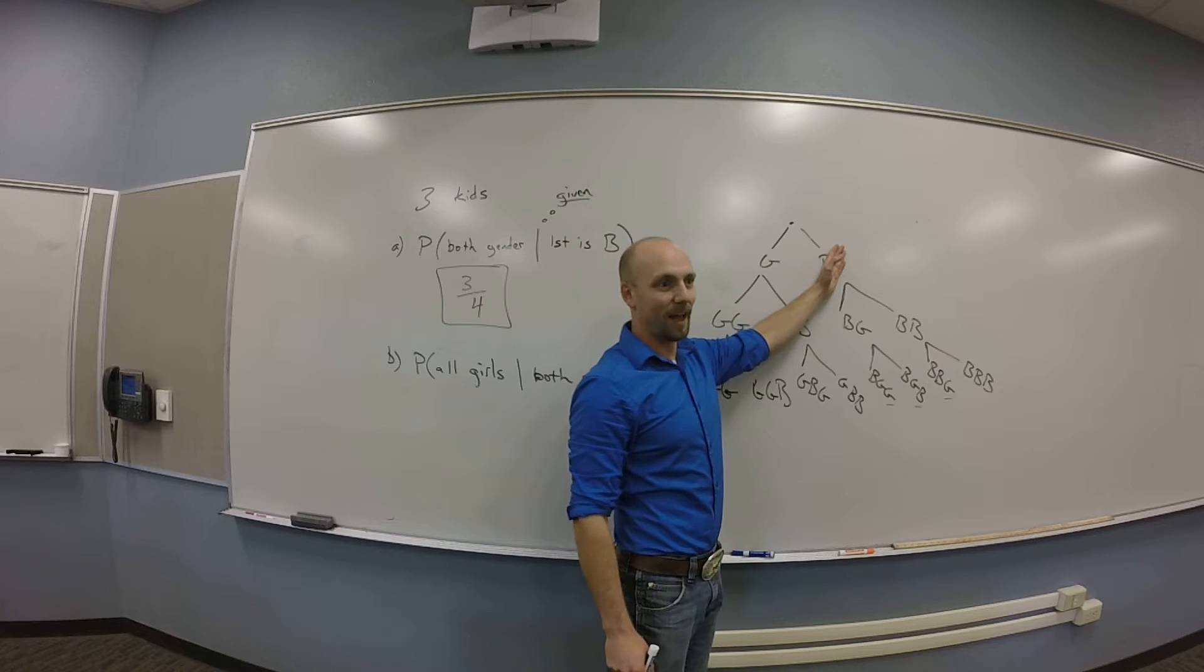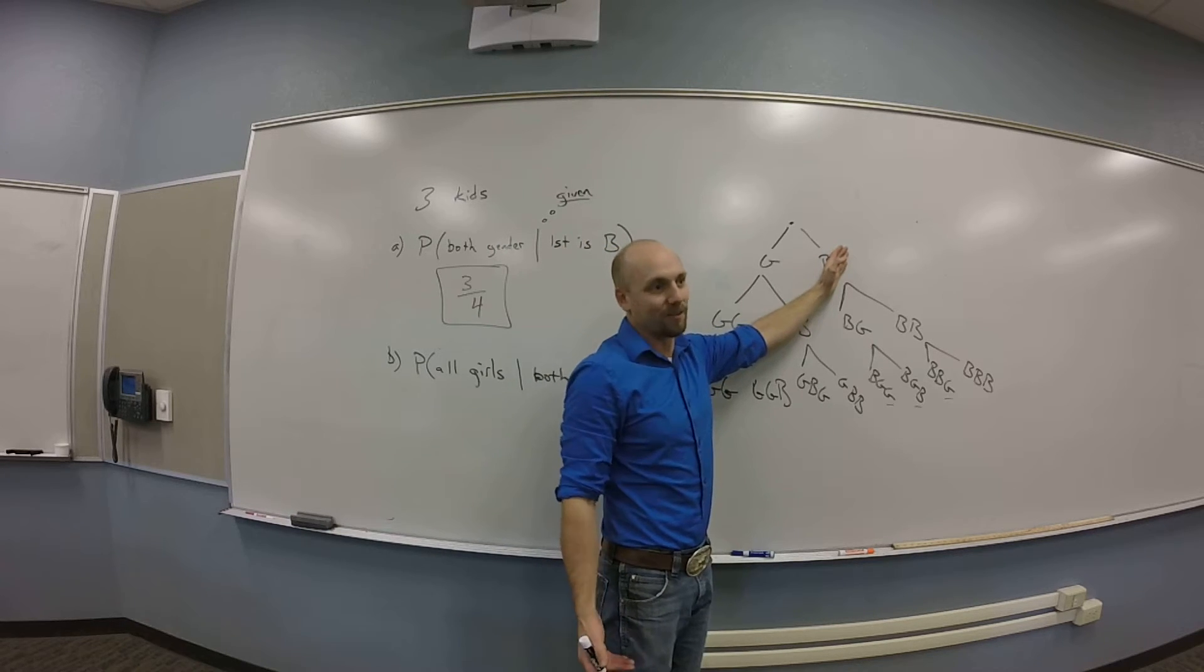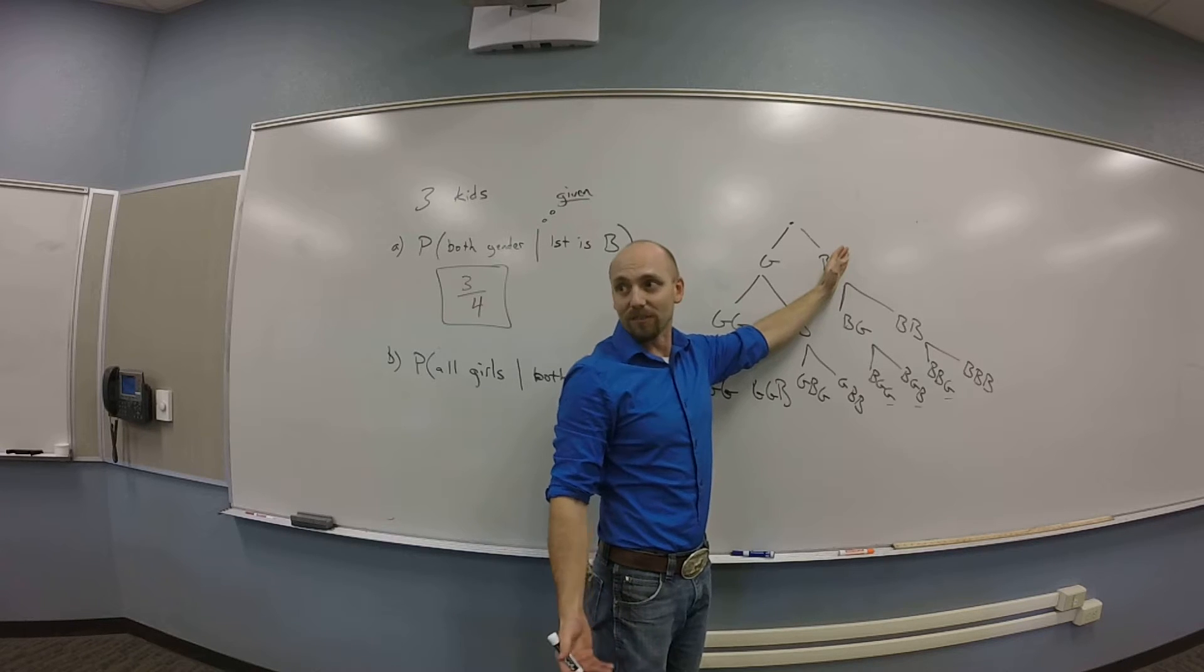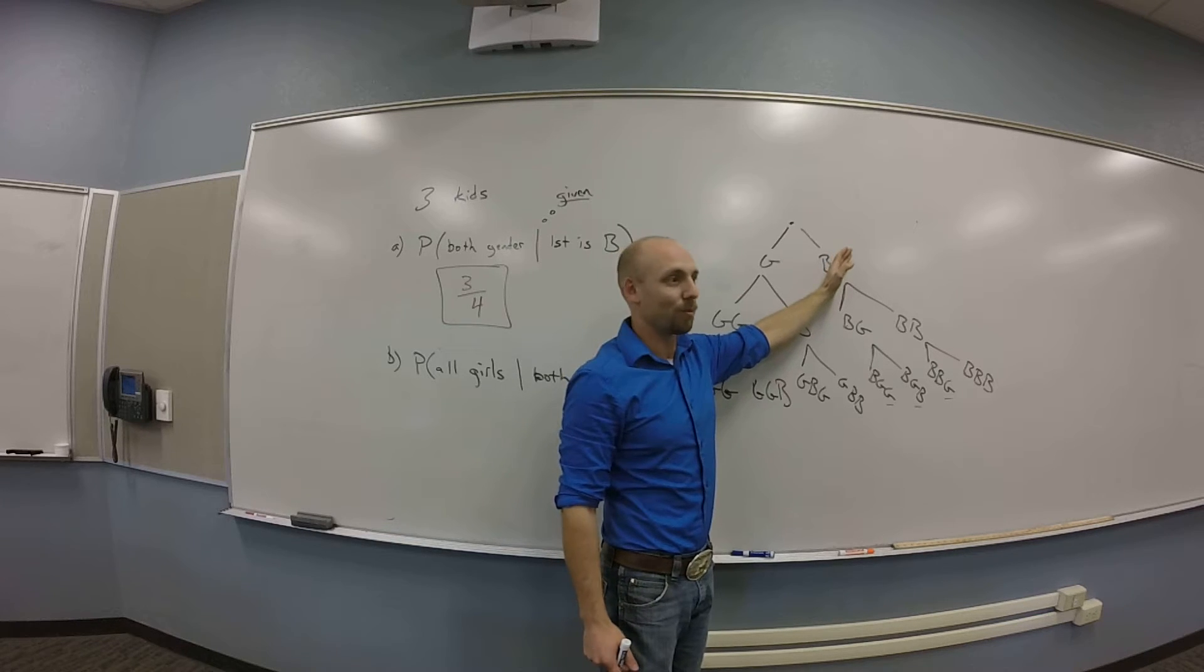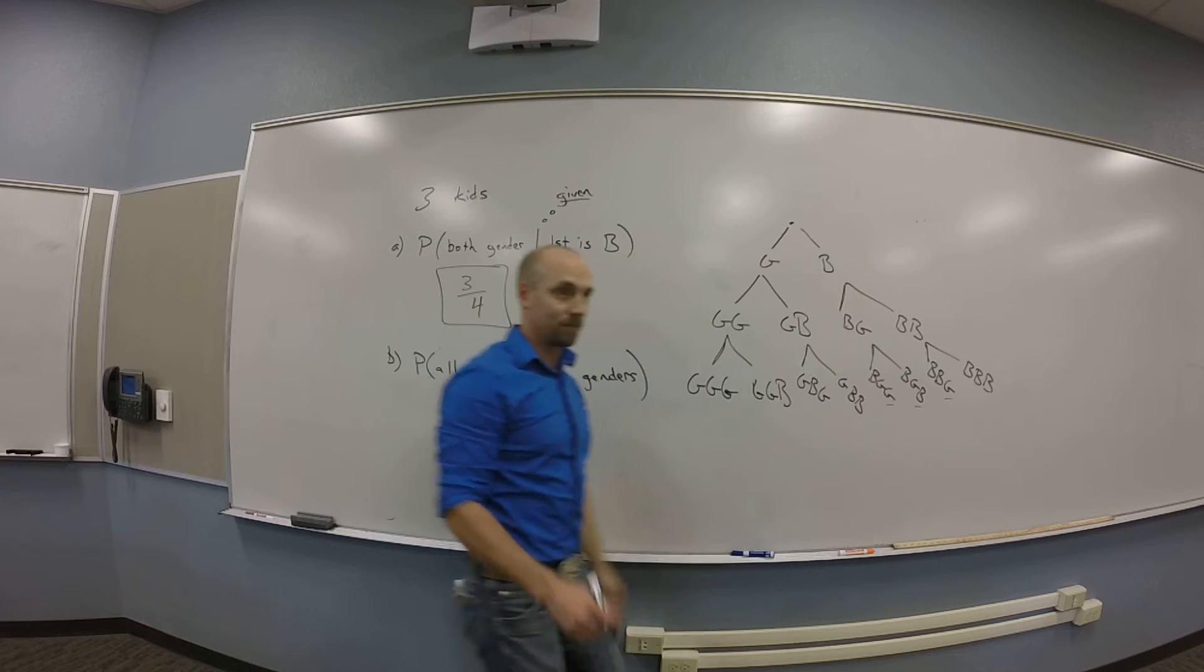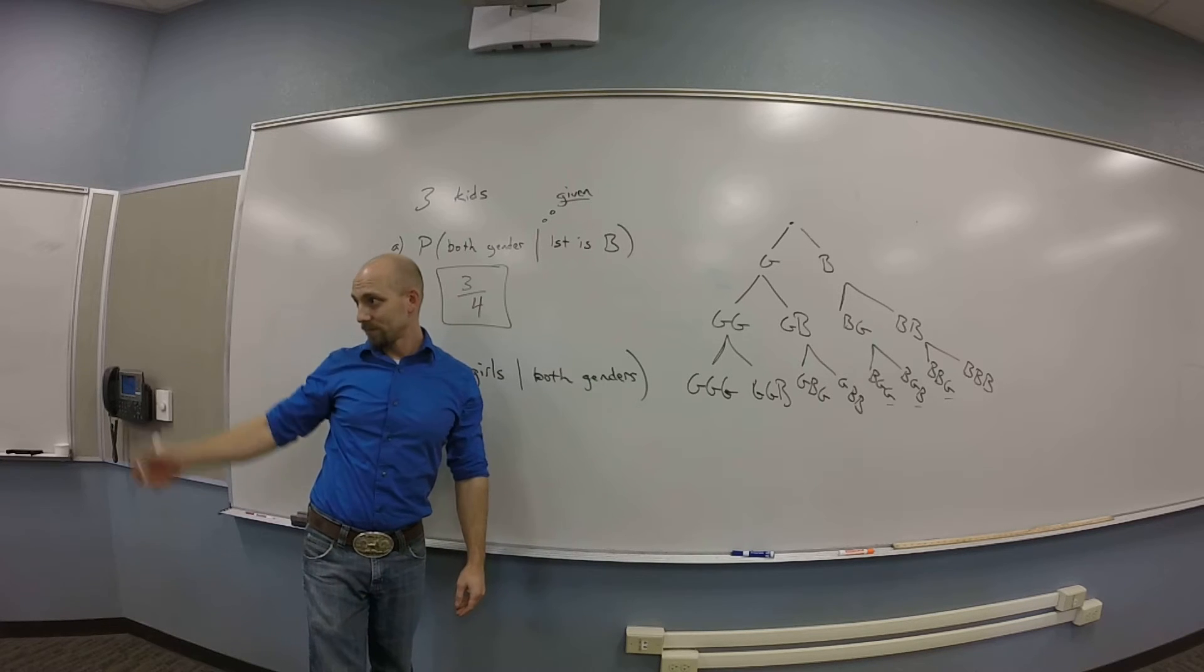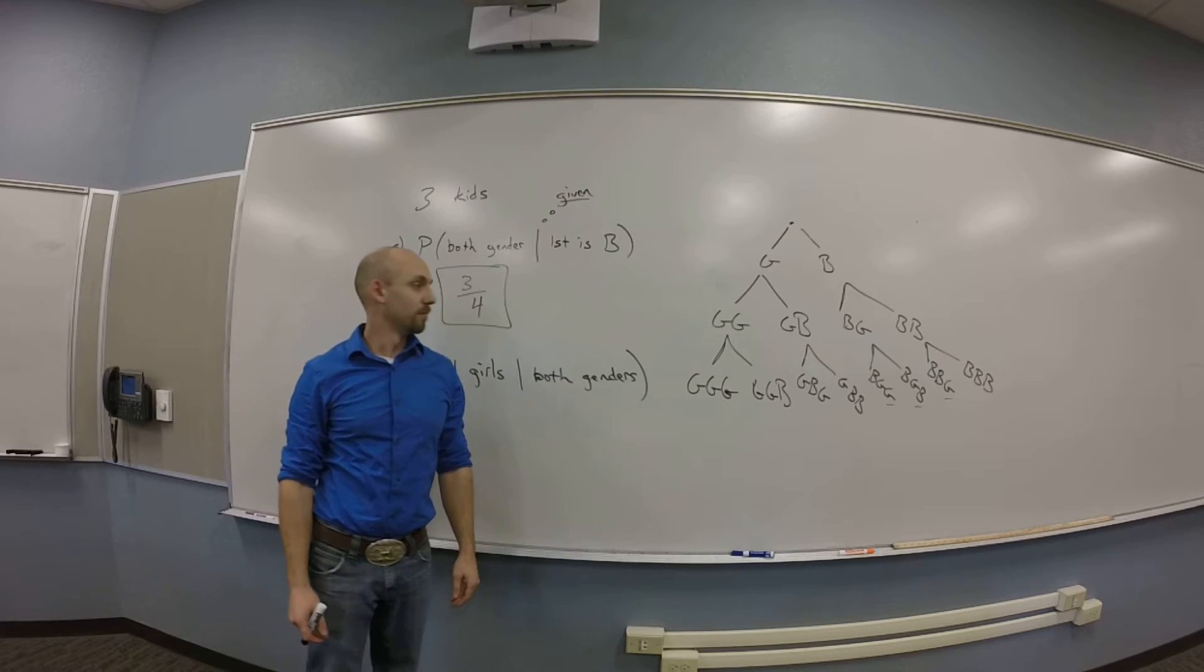They just start the tree from the second position instead of the first. Yeah, this amounts to starting the tree from just the first position, right? Like I could skip that first kid altogether because I already know it's a boy. And then I'm just interested in what's the probability that I end up with at least one girl in the mix after that. Or you can do all the outcomes and only look at the ones that have a boy in the first position. Yeah, sure.